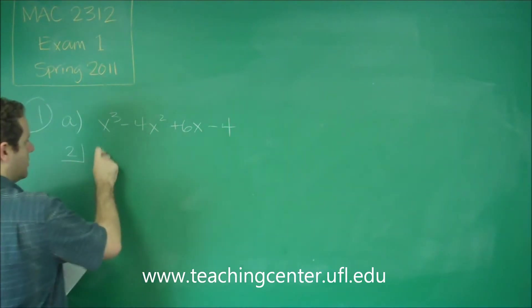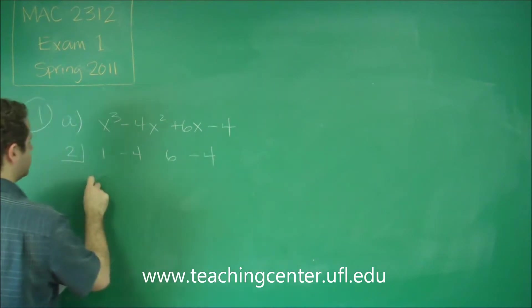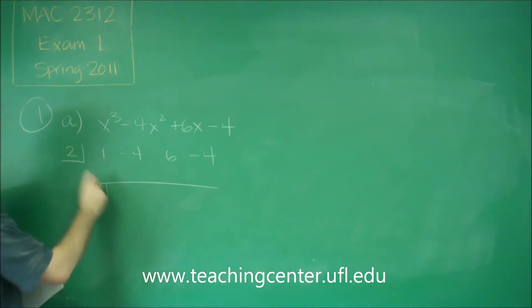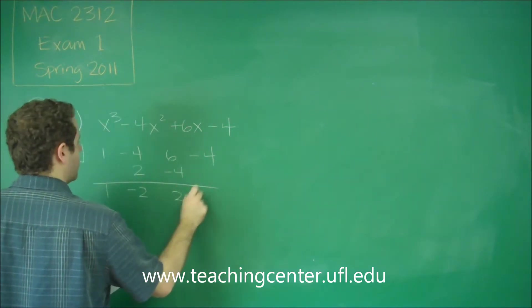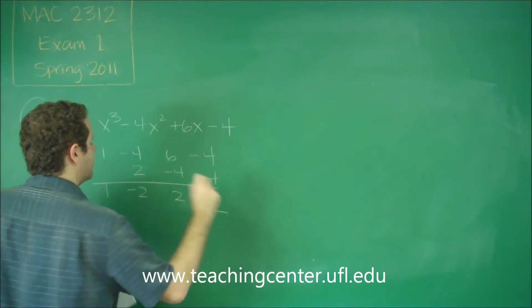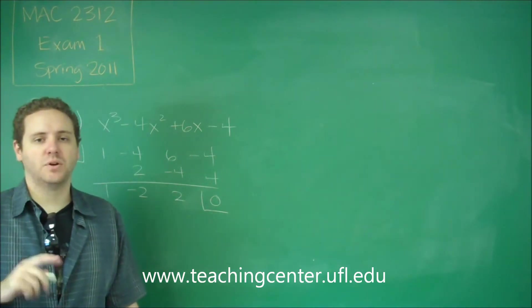It ends up being 2 as the zero that works here. So remember for synthetic division, you put your coefficients in line here. You add downward and multiply each time. So if we do this here, you can see that we end up with zero at the end. Zero remainder means 2 was a perfect zero of that.